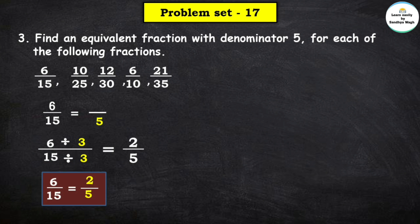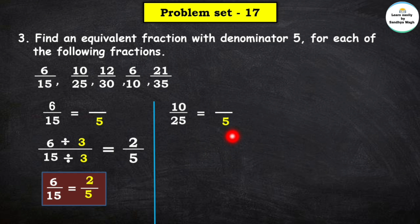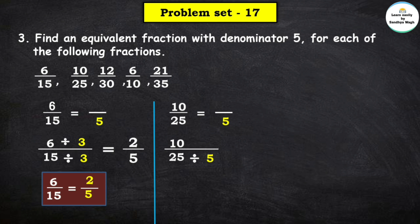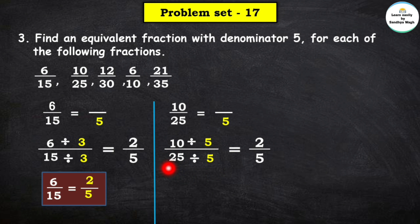So the equivalent fraction of 6 upon 15 is 2 upon 5. Next fraction is 10 upon 25. We need to find the equivalent fraction with denominator 5. 25 divided by which number equals 5? 5 × 5 = 25, so 5 is the divisor. We divide both numerator and denominator by 5: 10 ÷ 5 = 2 and 25 ÷ 5 = 5.